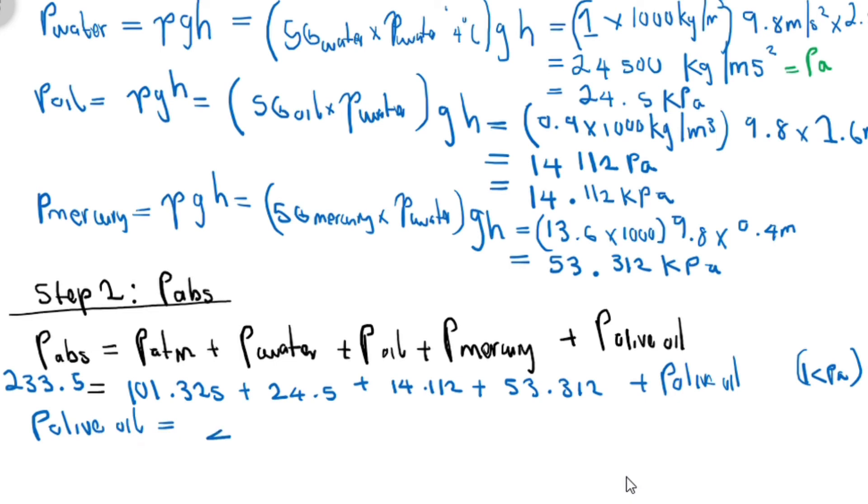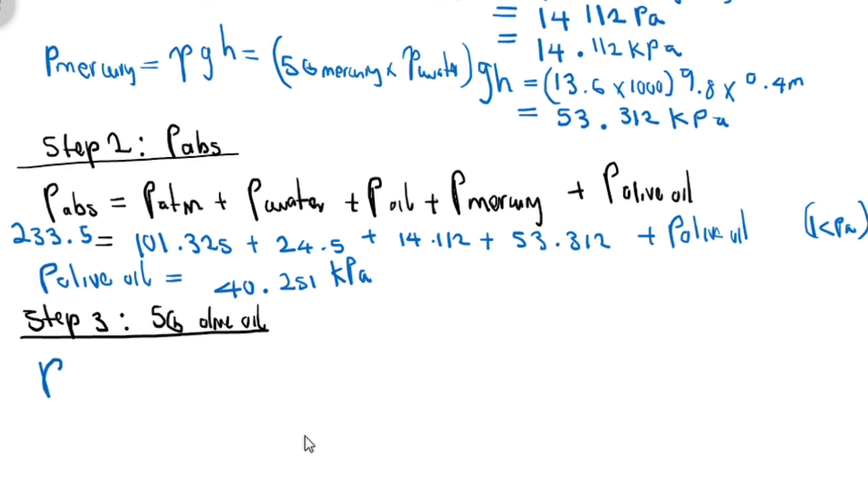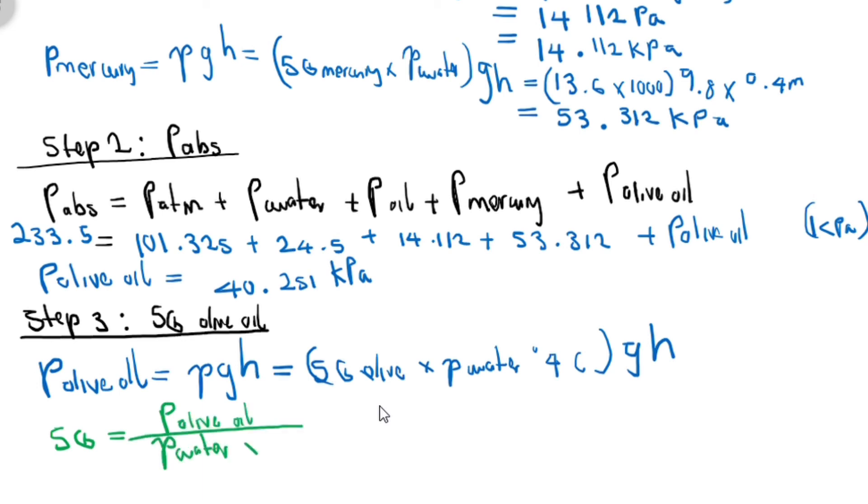Step three will be now to calculate the specific gravity of olive oil. We know that the gauge pressure of olive oil can be expressed as density times gravitational acceleration times height, which can further be derived and expressed as specific gravity times density of water times g times h. If I make specific gravity subject of the formula, we should get the gauge pressure of olive oil divided by density of water times gravitational acceleration times the height.